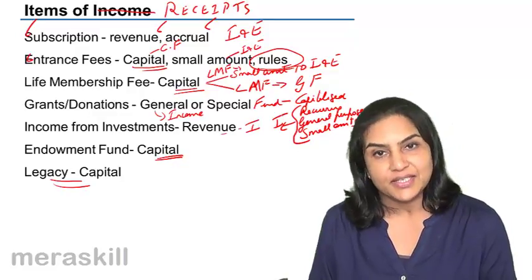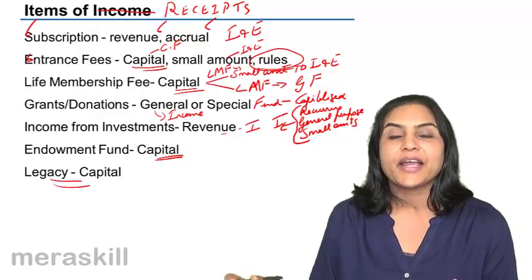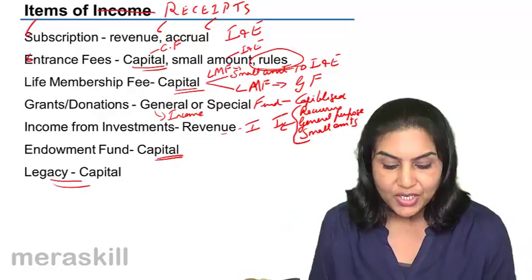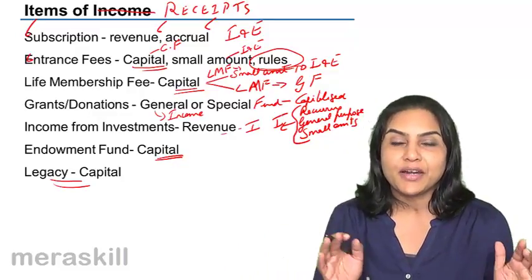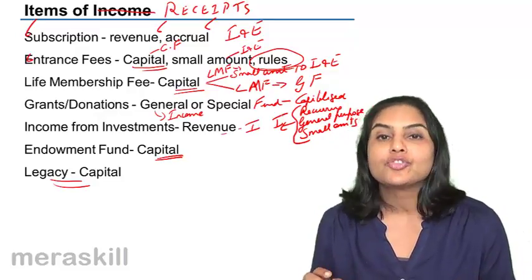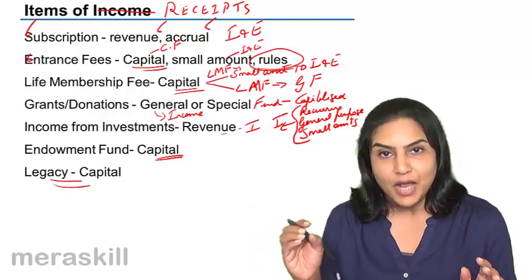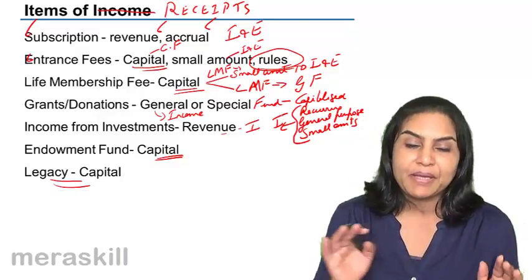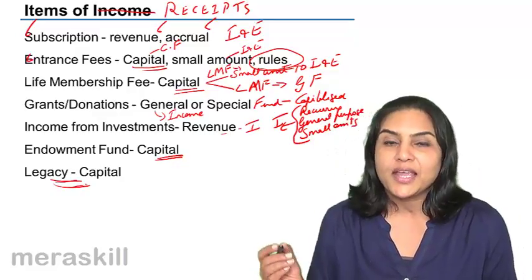Income from investments is an income and would appear in the income and expenditure account. An endowment fund is again a kind of gift or grant from an individual or organization, and it is normally capitalized. A legacy is similarly something bequeathed to the non-profit organization through a will. On the death of the particular person — whether a member or another individual — as per the will, part of their wealth, property, or assets may be given to the non-profit organization. That is a legacy and it is capitalized and transferred to the capital fund.